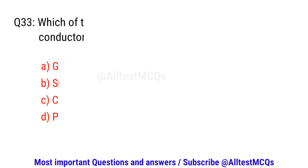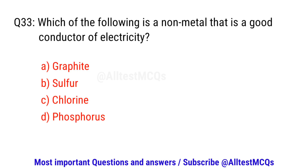Question number thirty-three. Which of the following is a non-metal that is a good conductor of electricity? The right option is A. Graphite.